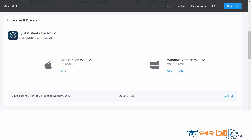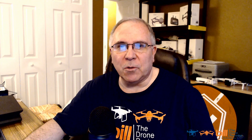We're going to go ahead and take a look at the list here, and then roll a clip on how to do them. We're going to be taking a look at: aircraft firmware update, remote firmware update, battery firmware update, IMU calibration, gimbal calibration, compass calibration, remote calibration, format SD card, and format internal storage. Without any further ado, let's roll that clip in its entirety.